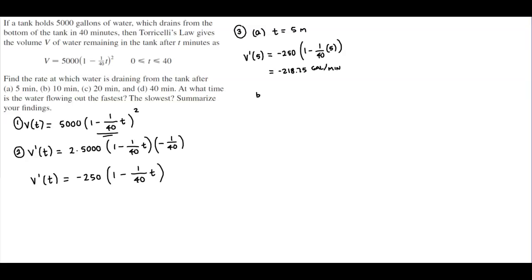In part B, T is equal to 10 minutes. So we find V prime of 10, which is negative 250 times (1 minus 1/40 times 10). That gives us negative 187.5 gallons per minute.